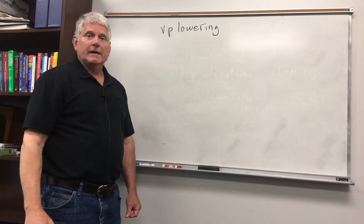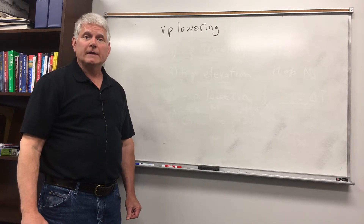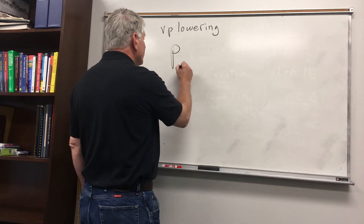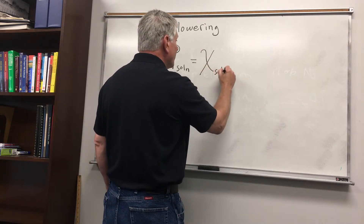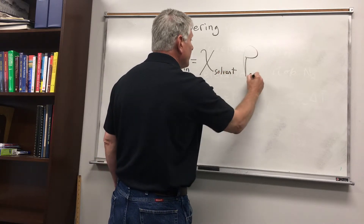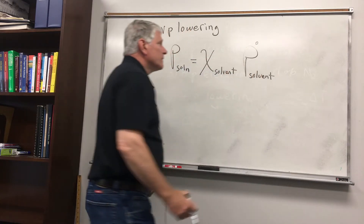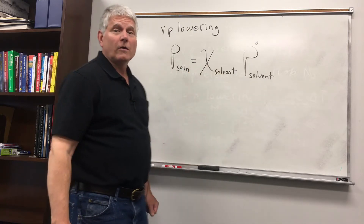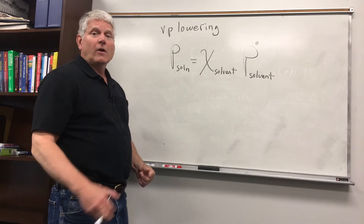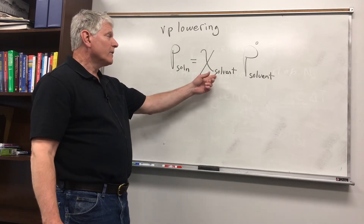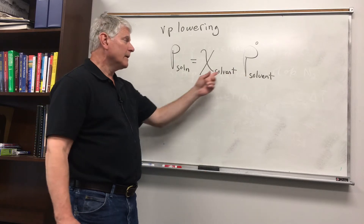Let's consider vapor pressure lowering. If we dissolve a solute into a solvent, the vapor pressure of the solvent decreases. We can write: the vapor pressure of the solution equals the mole fraction of the solvent times the vapor pressure of the pure solvent. We saw mole fraction before when we studied gases. If something is dissolved in a solvent, the mole fraction of the solvent will be less than one, so the vapor pressure will be less than that of the pure solvent, because we're multiplying by a fraction.